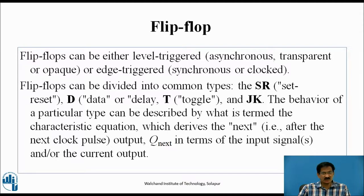Flip-flops can be divided into common types: the SR set-reset, D data or delay, T toggle, and JK flip-flops. The behavior of a particular type can be described by what is termed the characteristic equation, which derives the next output after the next clock pulse in terms of the input signals and/or the current output.